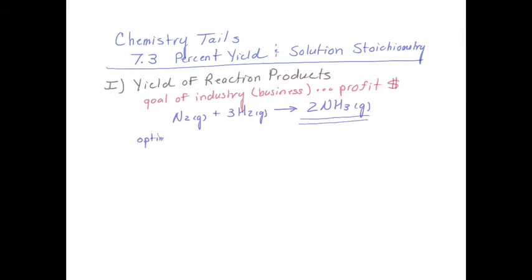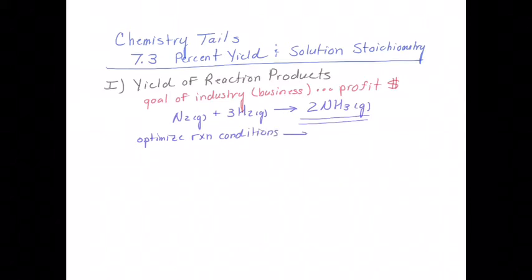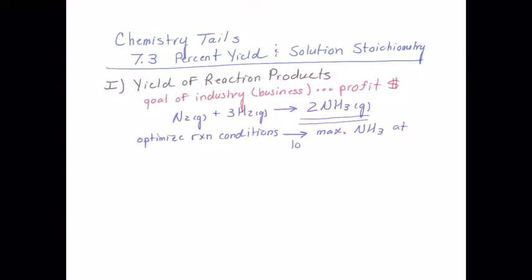Let's consider the reaction in which we're producing ammonia. We react nitrogen and hydrogen gases and we produce that ammonia. When we carry out this reaction, we try to optimize the conditions so that we get the maximum amount of the ammonia gas possible. But when you go into the laboratory, things don't happen perfectly. Gases will tend to escape through little holes, and so if you don't completely capture all the gas that gets produced, your yield is going to be lower.